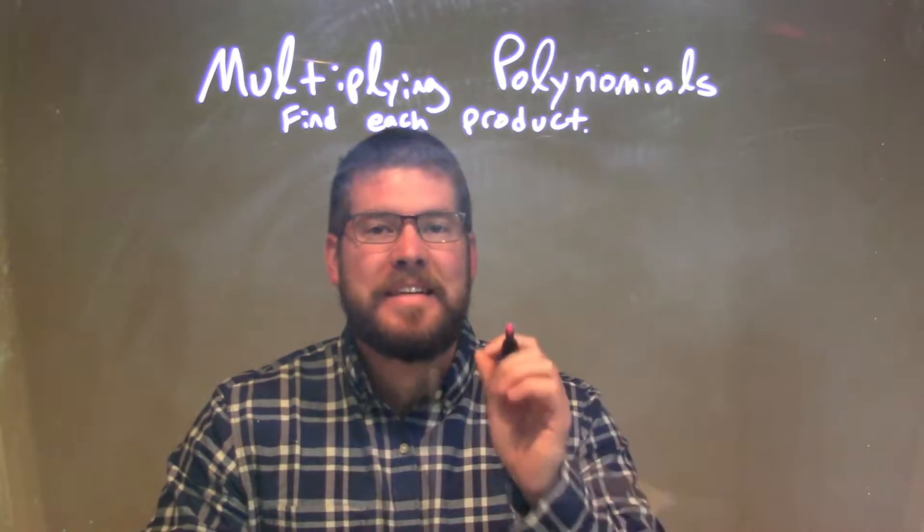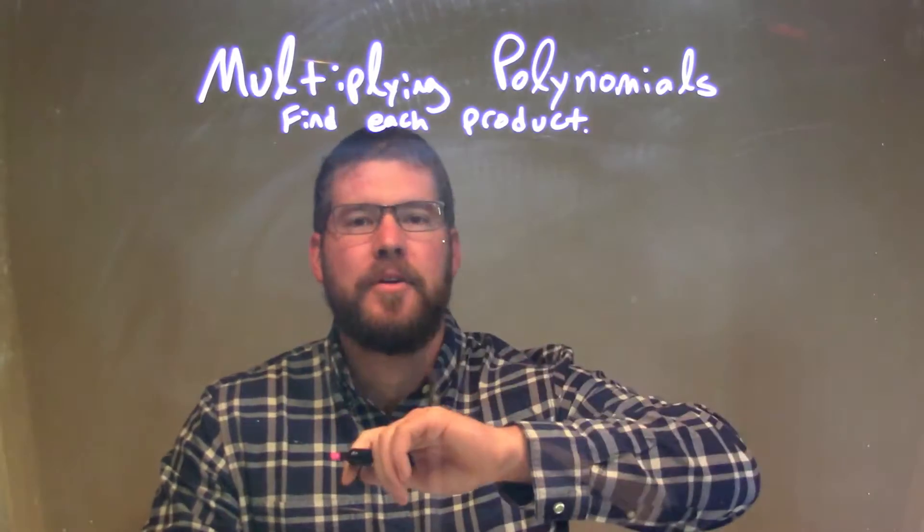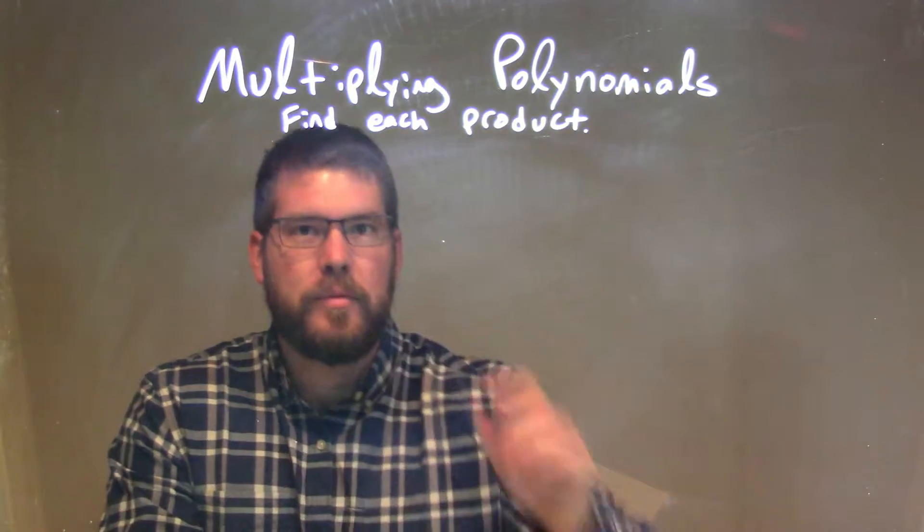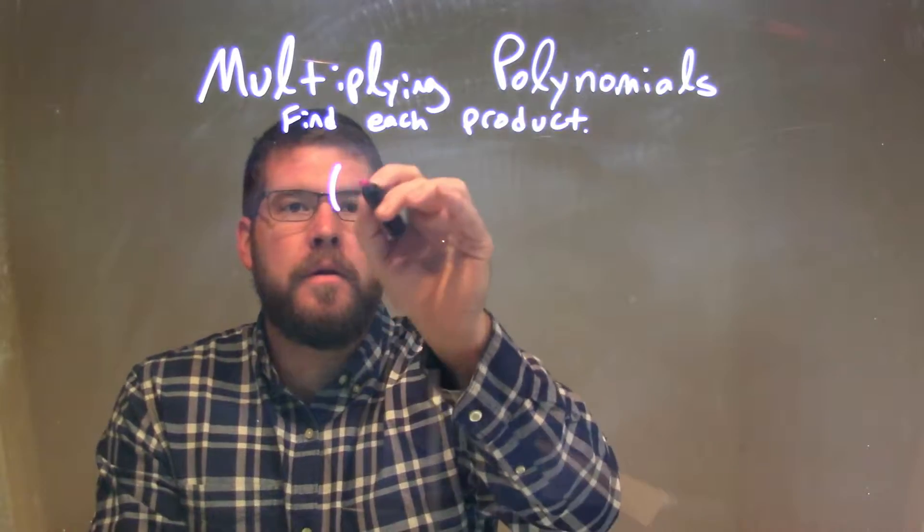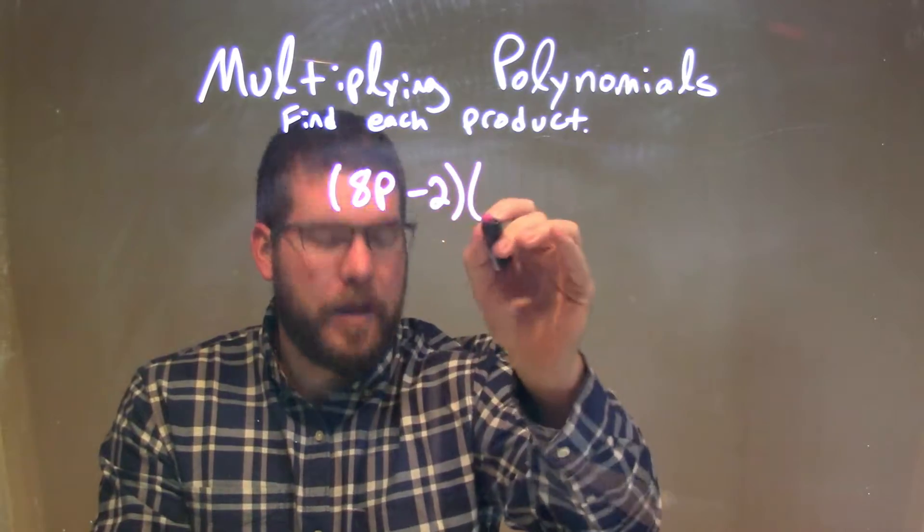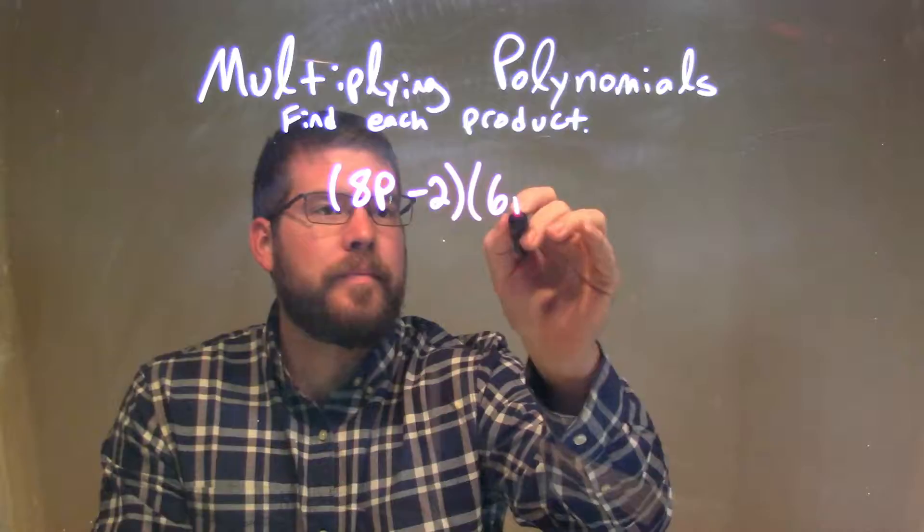Hi, I'm Sean Gannett and this is MinuteMath and today we're going to learn about multiplying polynomials and find each product. So if I was given this problem, 8p minus 2 times 6p plus 2.